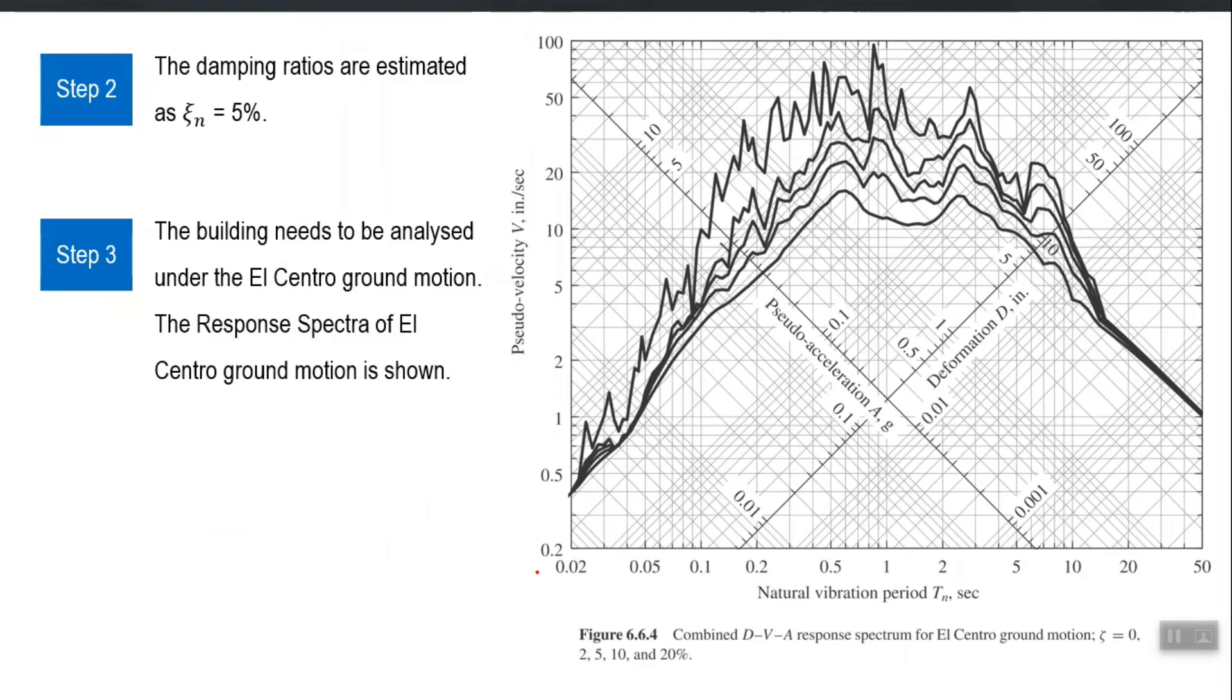Second step was assuming the damping ratio. So, I assumed 5 percent for all modes. Third step was the construction of response spectrum. So, let us assume for this example sake that we want to calculate the response of this five-story building against a past earthquake, and that is El Centro earthquake. So, our El Centro earthquake history is available.